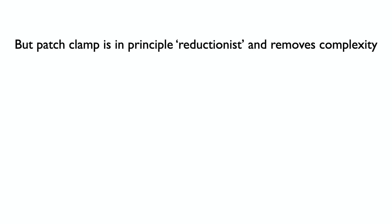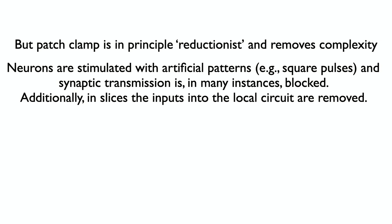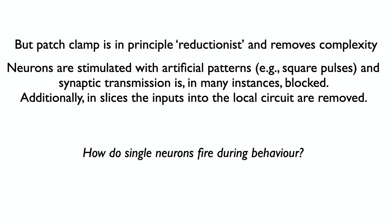But patch clamp is in principle reductionist — it removes a lot of complexity. Neurons are stimulated with artificial patterns like square pulses; no neuron in the brain receives a square pulse through a micropipette. Synaptic transmission is often blocked to explore intrinsic properties, not all neurotransmitters are present in the slice, and inputs into the local circuit are removed — for example, a prefrontal cortex slice loses visual cortex inputs. So a key question is: how do single neurons actually fire during behavior?